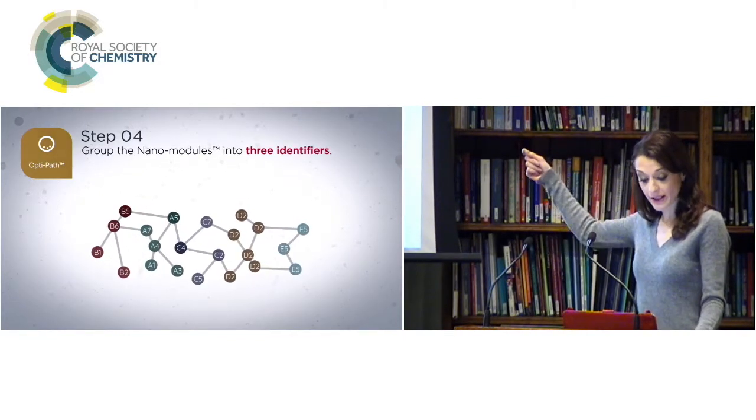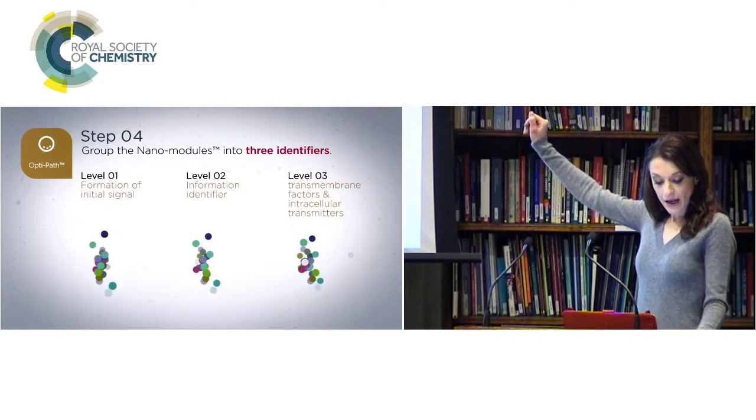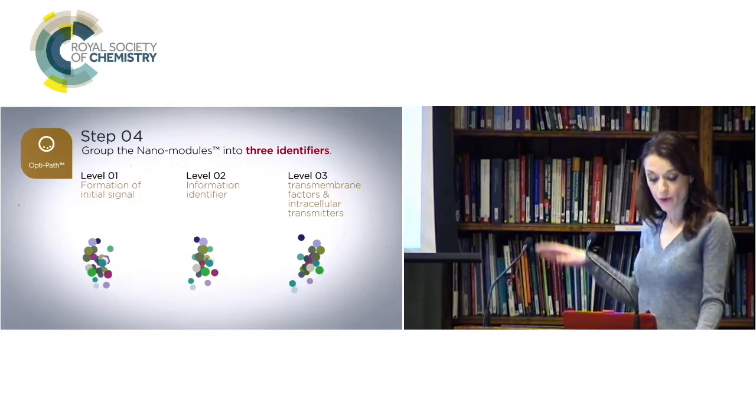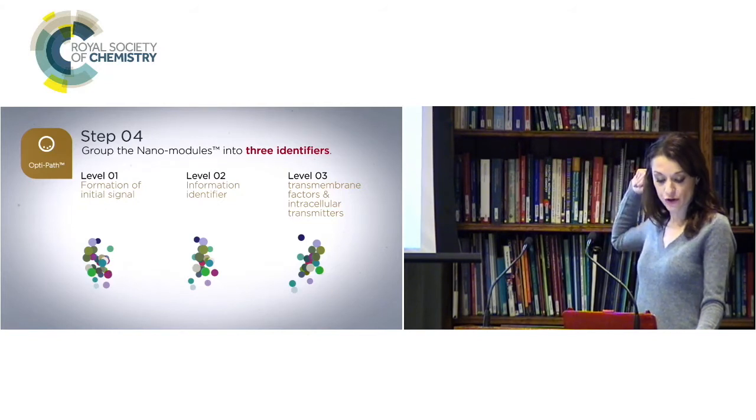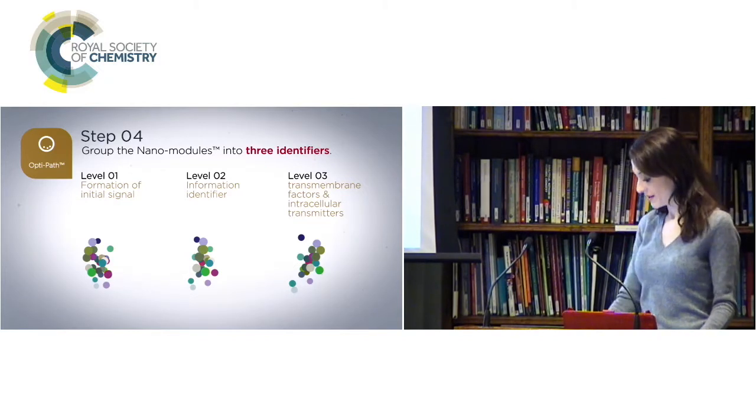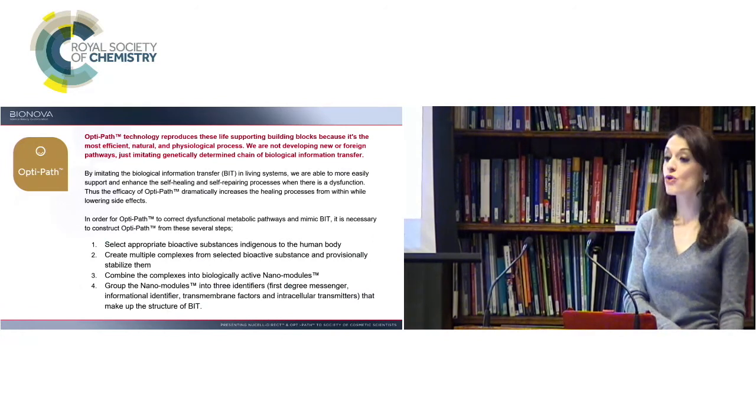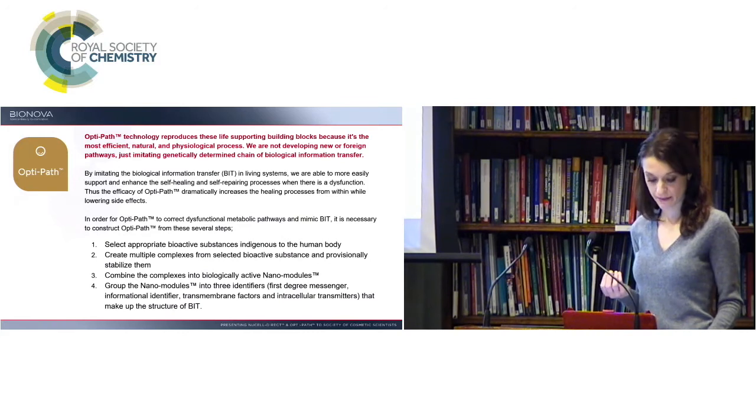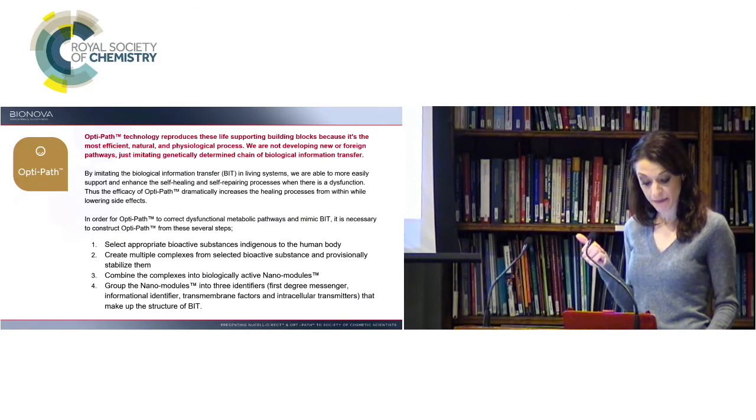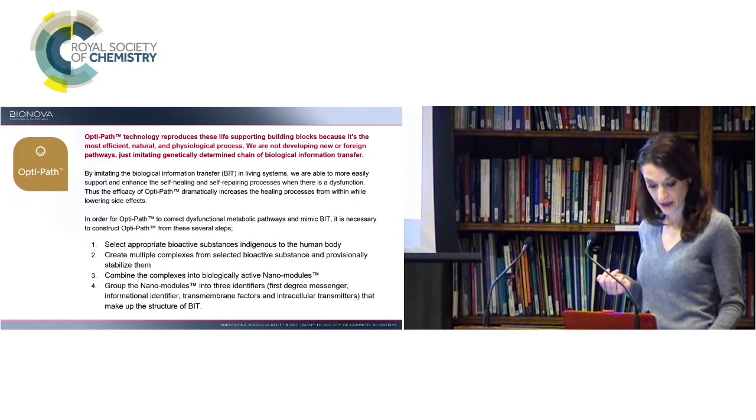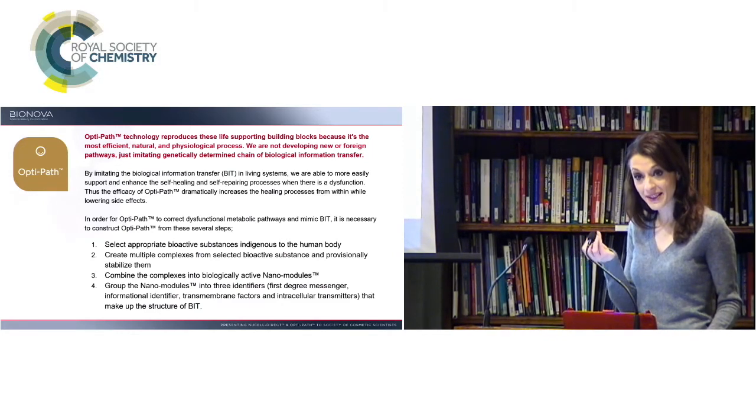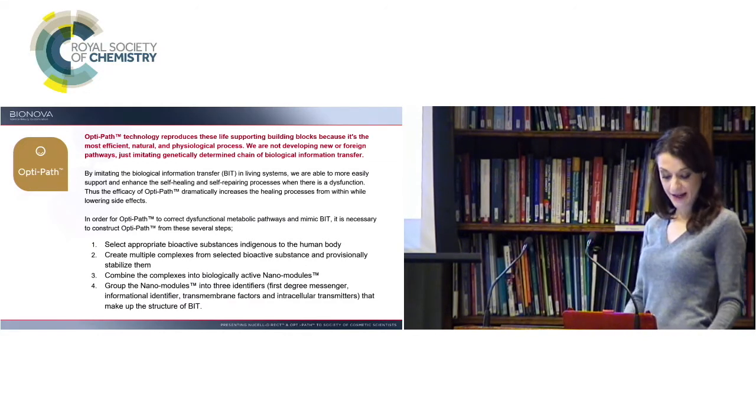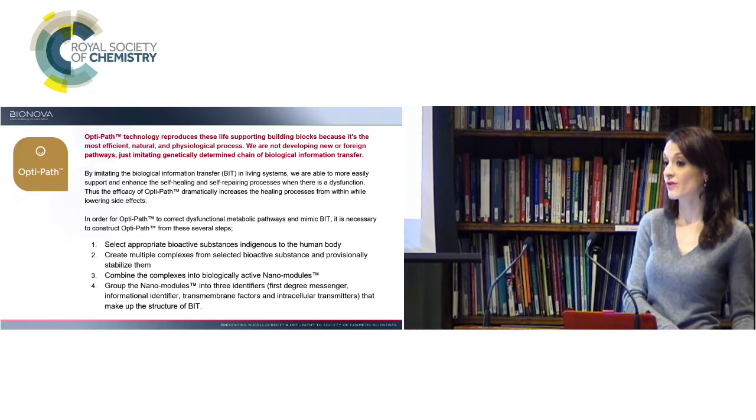OptiPath is a method of bio-nutrient composition in nano and picogram quantities. By imitating the biological informational transfer BIT, we are able to support and enhance the self-healing and self-repair process when there is a dysfunction. Select appropriate bioactive substances indigenous to the human body. Combine multiple complexes from selected bioactive complexes and provisionally stabilize them. And combine the complexes into nano modules with three identifiers. In short, OptiPath is the technology that allows to reproduce life-supporting building blocks by imitating BIT. We start with the damaged cell and then we determine what these cells require to heal themselves and correct the problem. And this is what brings us to New Cell Direct.